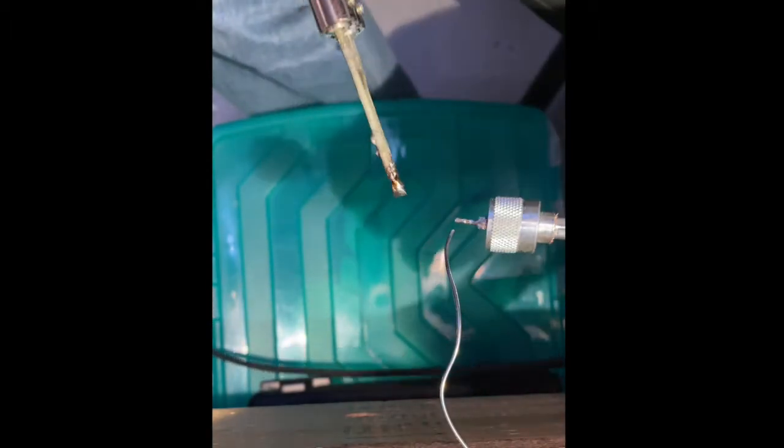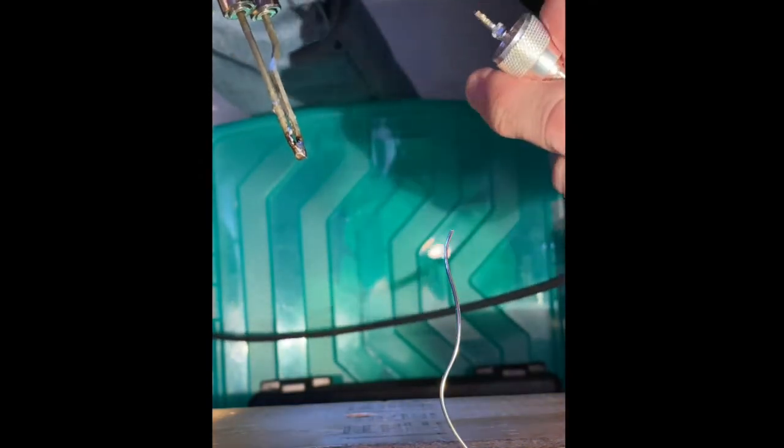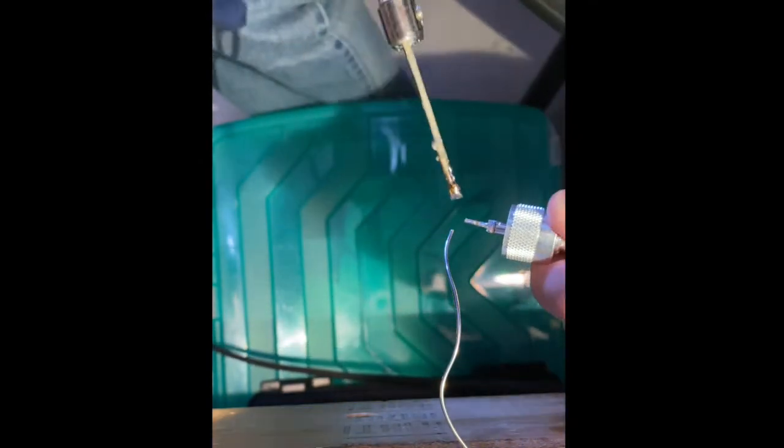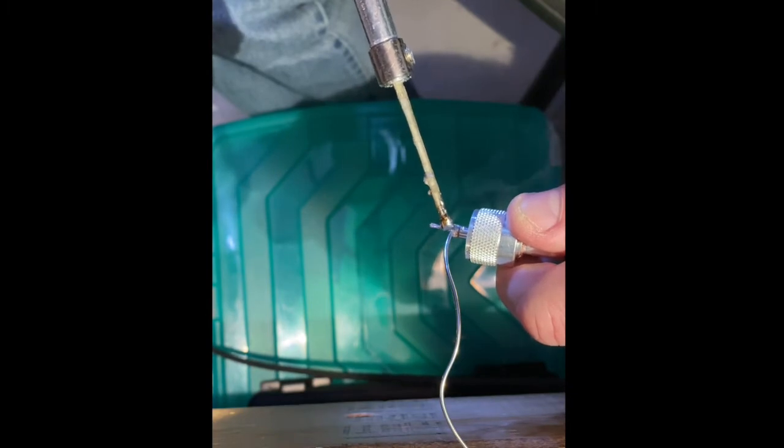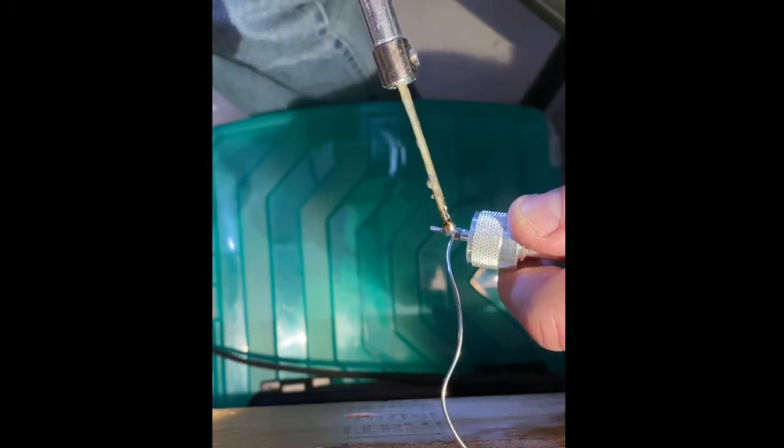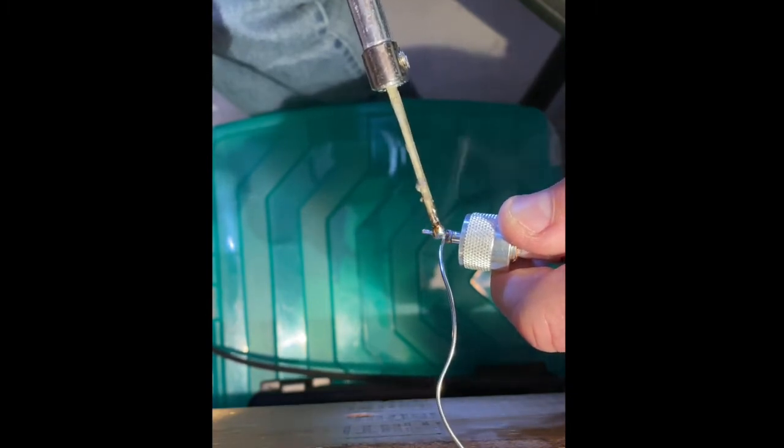And one thing we can do is we can tip the connector downwards so the solder doesn't flow inside. And I'm also going to pull the ring back. Okay. So, I'm holding it that way. I'm going to get it hot again. And I'm going to get the solder to flow just a little bit into there.